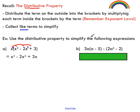This next example is another distributive property situation where we want to eliminate parentheses. We're going to take the term on the outside, draw our rainbows, and distribute into the inside by means of multiplication. Just be careful here — this minus sign is tricky because there's actually a 1 there. So we're actually going to be taking negative 1 and distributing it into the brackets by multiplying. Don't get tripped up by that; this is just another multiplication situation.